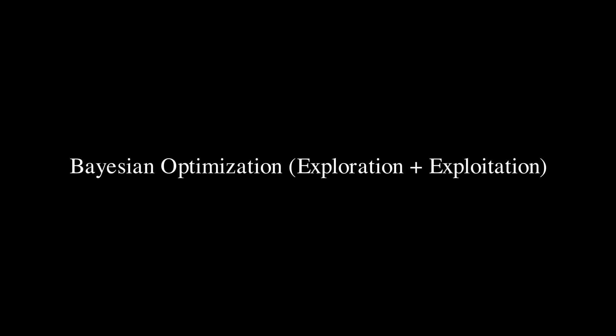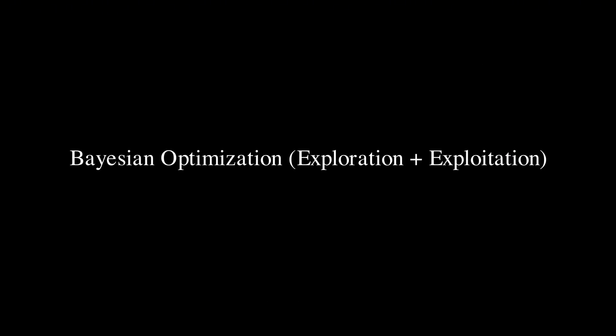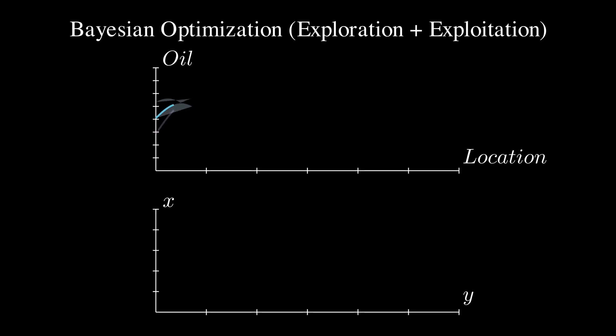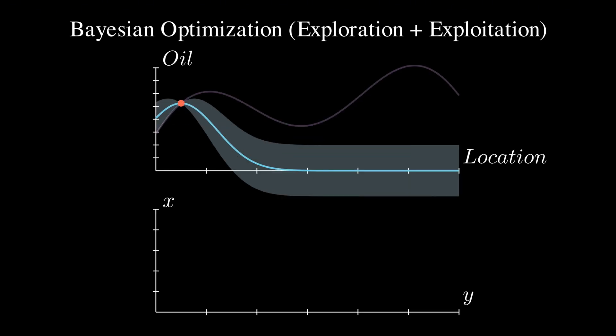Bayesian optimization takes a smarter approach. Instead of only exploring, it balances exploration with exploitation. This means we want to drill in areas that either have high predicted oil content, or high uncertainty, or ideally both. This balancing act is handled by what we call acquisition functions.